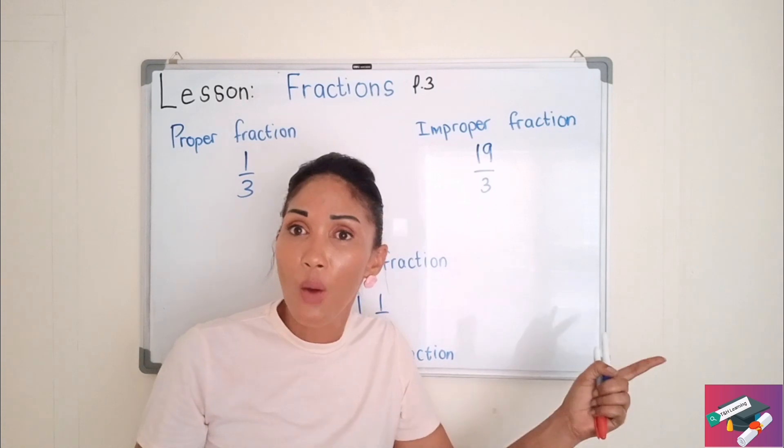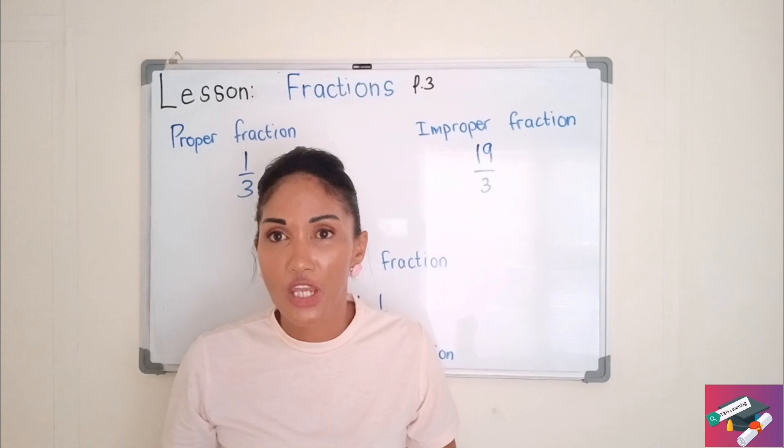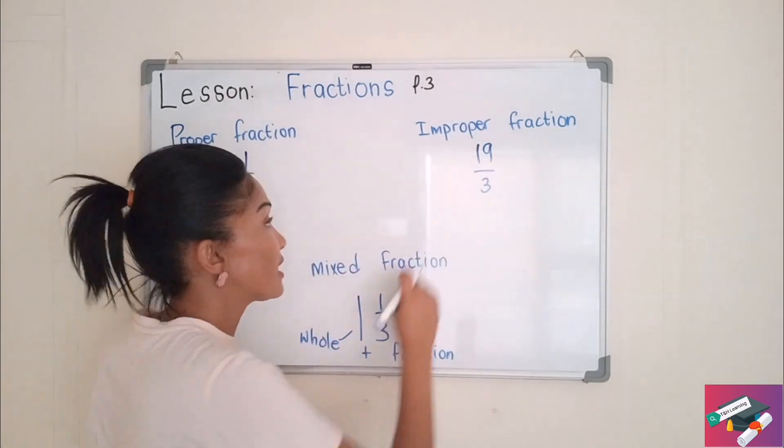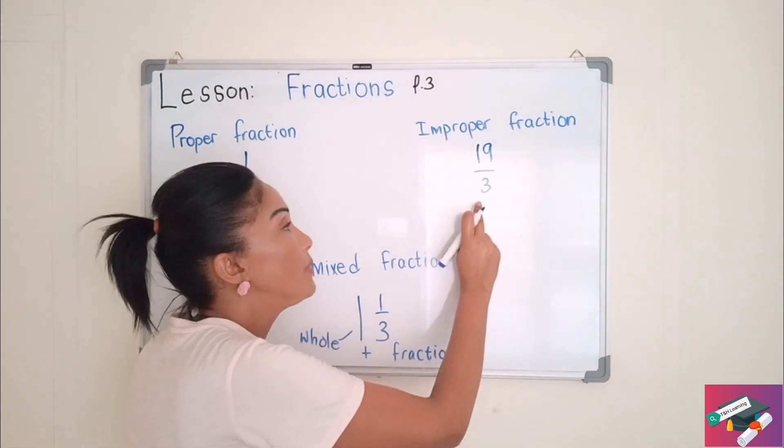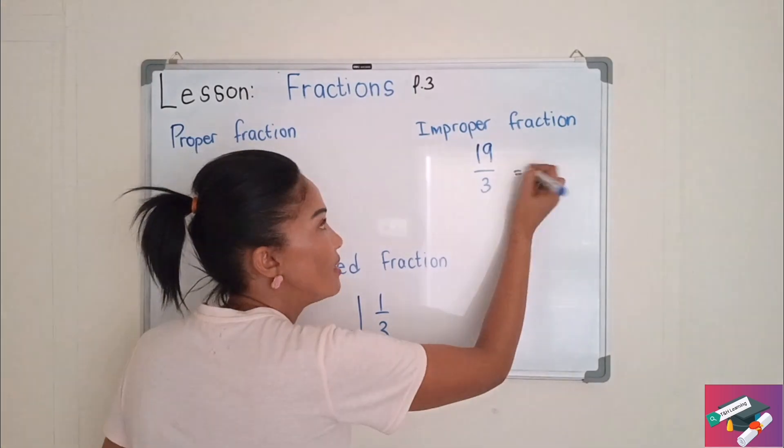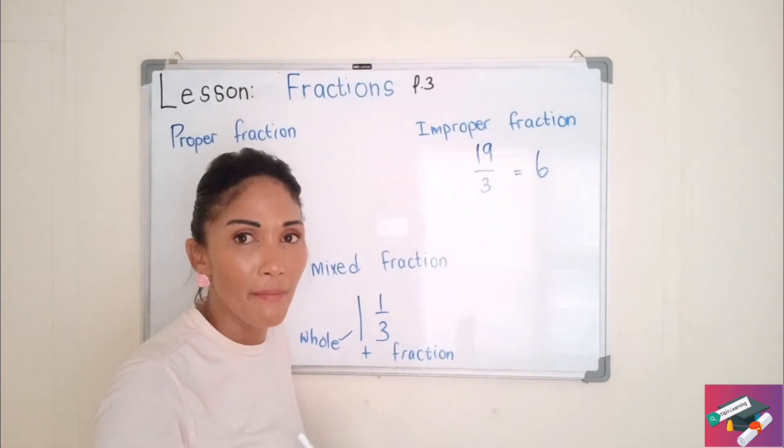So when it's improper or mixed, we need to convert them so that they can be a proper fraction. So 19 over 3, I'm going to take my denominator and divide it into 19. So how many times can 3 go into 19? It can go in there 6 times. So 6 will be my whole number.